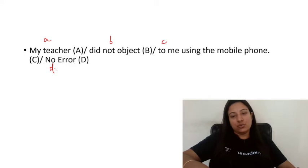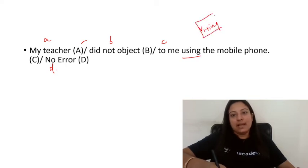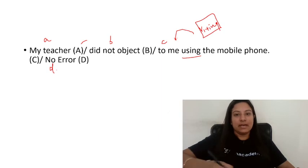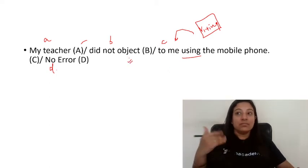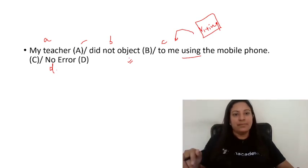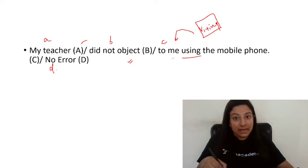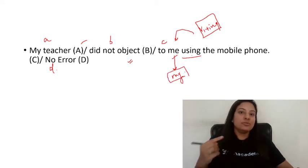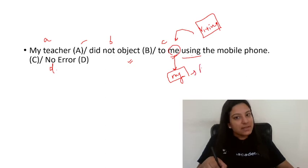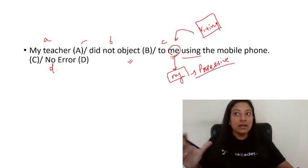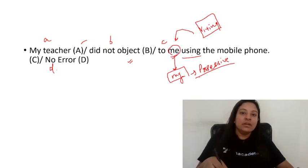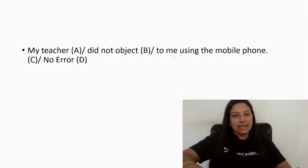Next: 'My teacher did not object to me using the mobile phone.' When a V1+ING form is used and you are expressing belonging — like 'my using', 'his using' — you use the possessive case before the gerund. If it were a noun, we'd add apostrophe-S; since it's a pronoun, we take its possessive form. So 'my' will be used before 'using', not 'me'. The correct form is: 'object to my using the mobile phone'.